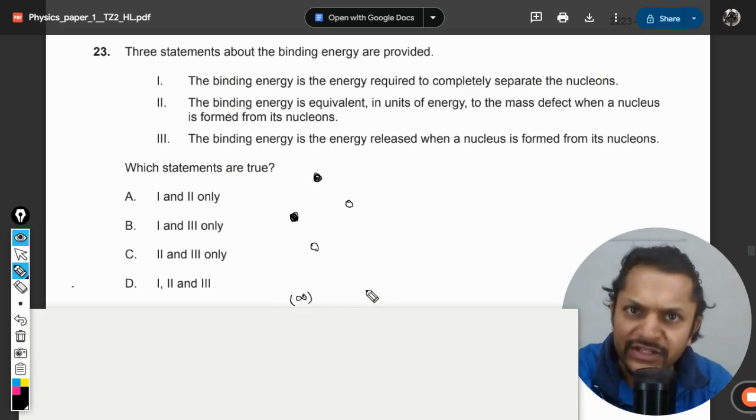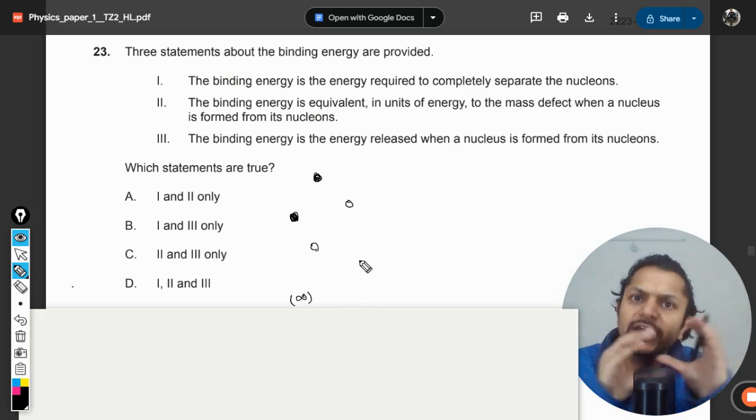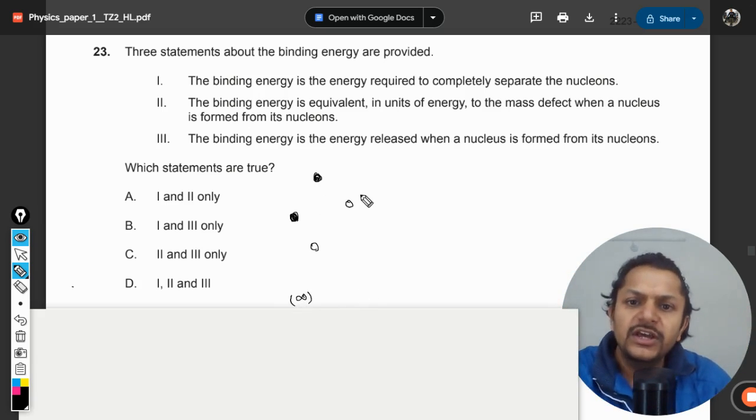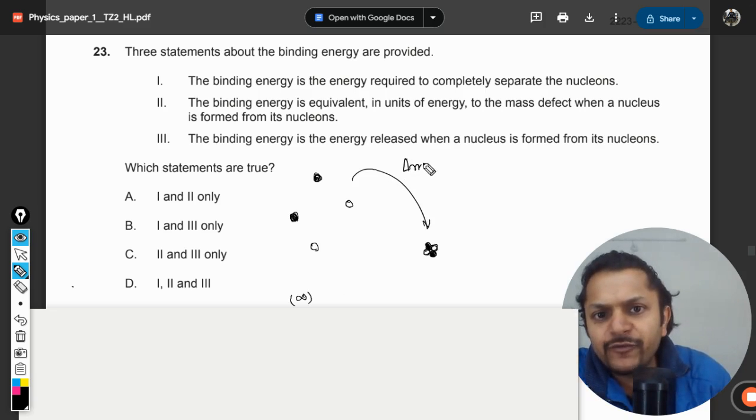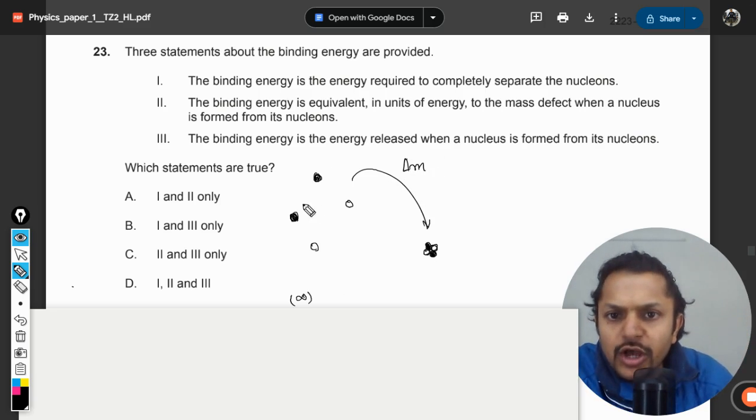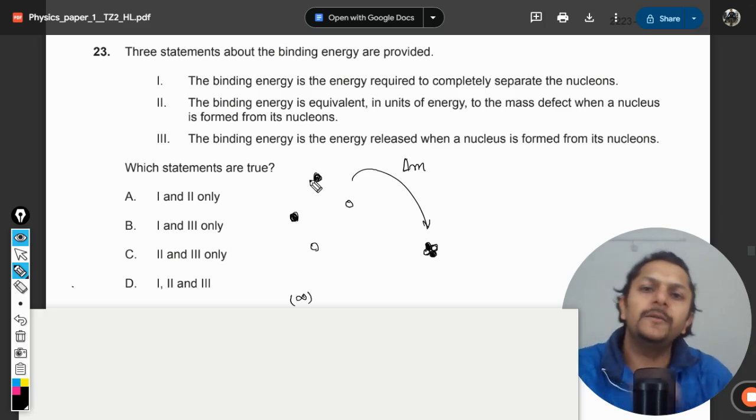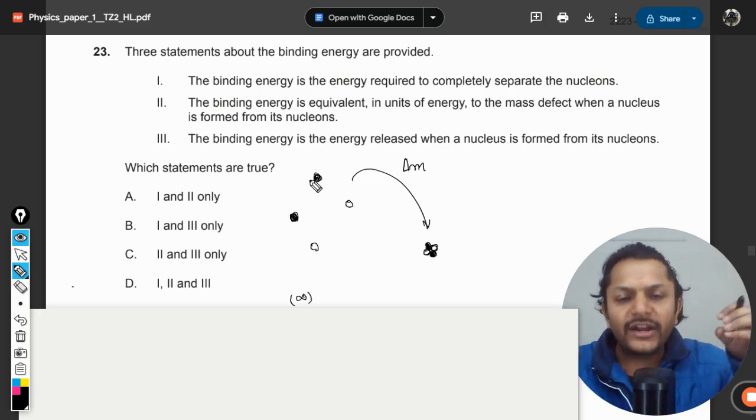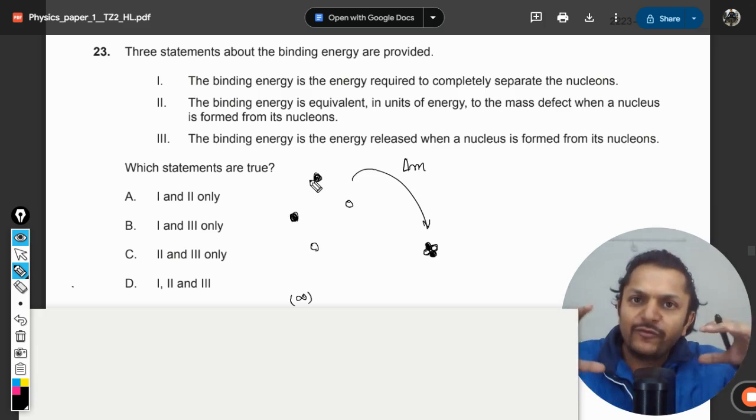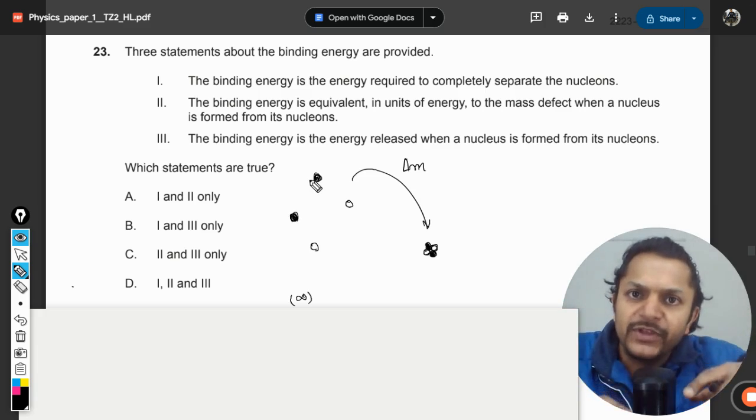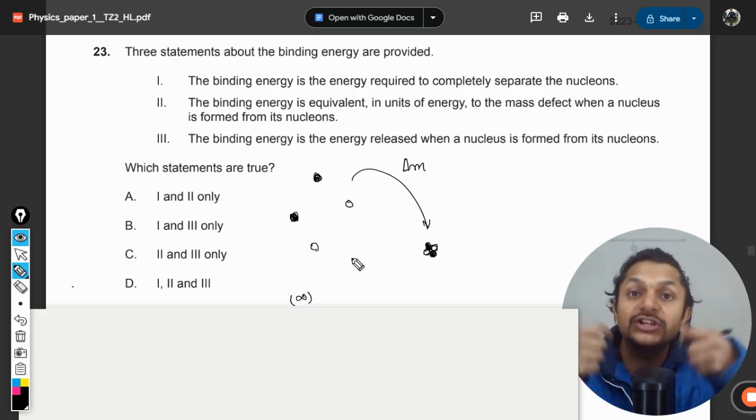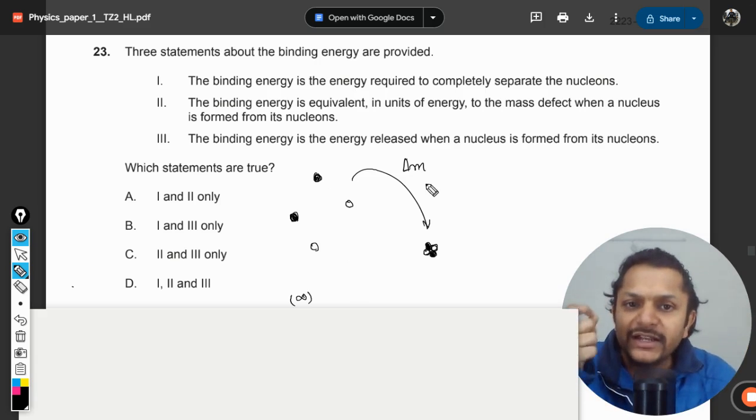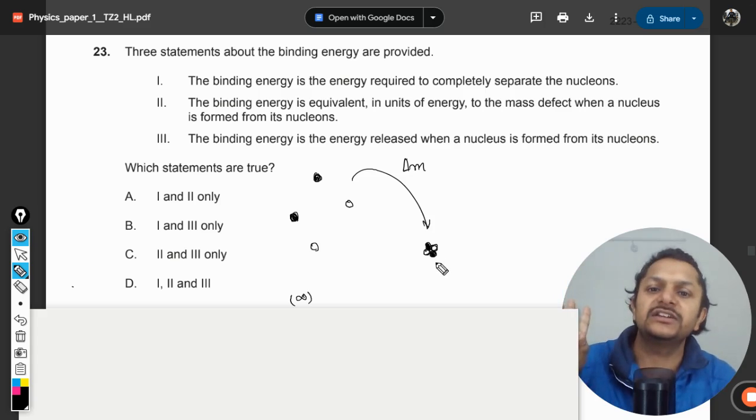So they have to come together to create a nucleus. When they come together and the nucleus is created, some mass have to be given up by these nucleons. Obviously they have to cover up the individual repulsion which is taking place between two protons. They have to cover up that repulsive forces, so some energy has to be created. So what happens is when they come together they lose some mass. So that delta m is called mass defect and a nucleus is created.